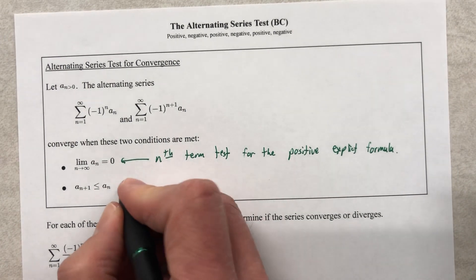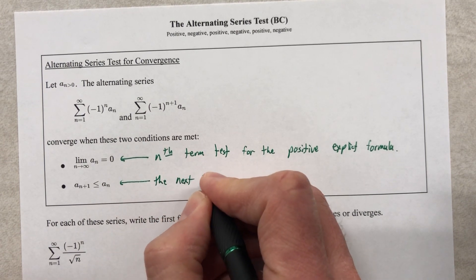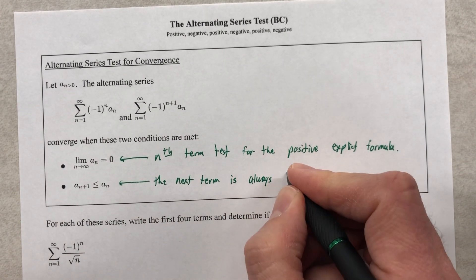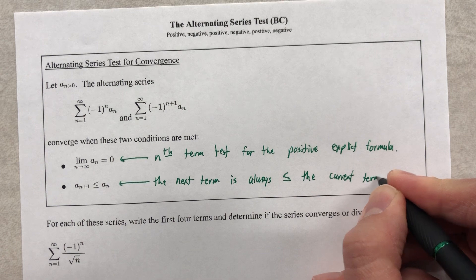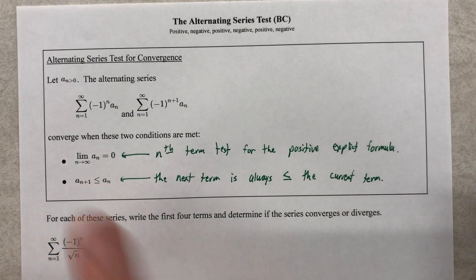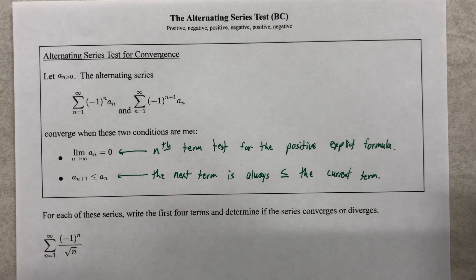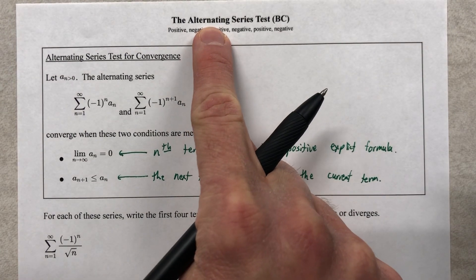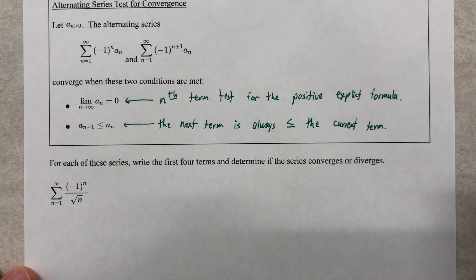It is a factor that toggles, switches my sign back and forth. So this is the nth term test for the positive explicit formula. Like if I took the absolute value of this and I had no more switching back and forth, that would be what I'm dealing with. And I want to make sure that it approaches zero as n approaches infinity, nth term test basically. And then this is a fancy way of saying the next term is always less than or equal to the current term.